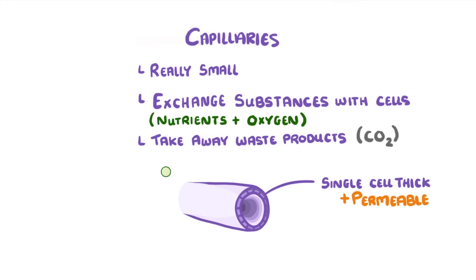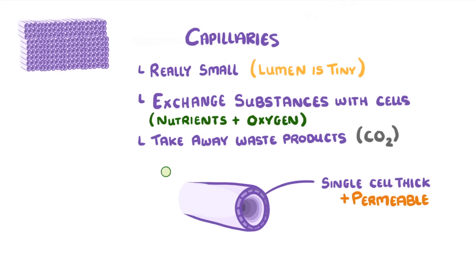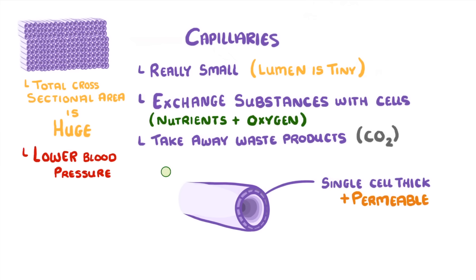Because they're so tiny, the lumen of an individual capillary is also tiny. But there are so many of them that their total cross-sectional area, which is just the area of all the capillaries added together, is actually huge — far higher than for arteries. This means that the pressure of the blood is much lower than in the arteries, and so it flows more slowly, which gives the blood time to exchange things with the tissues.